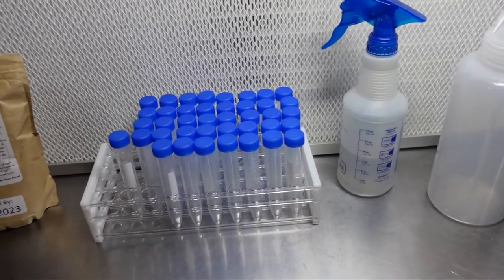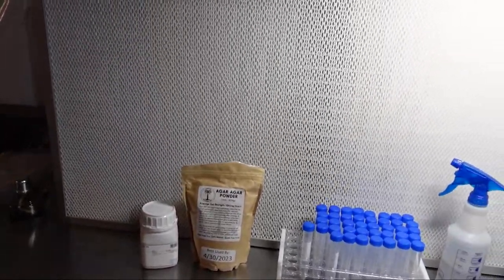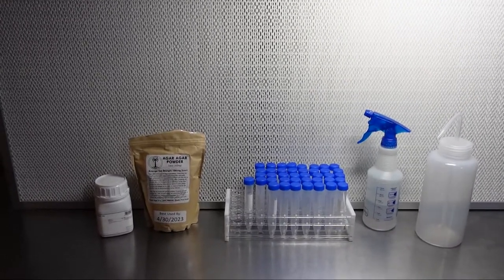To make agar slants, you'll need culture tubes with screw caps, agar powder, potato dextrose or some other nutrient, and a plastic dispensing bottle.